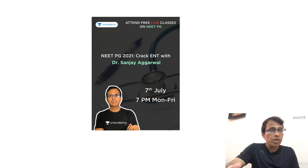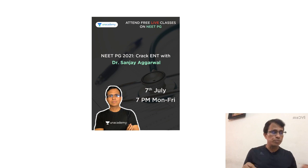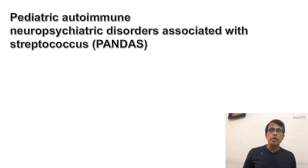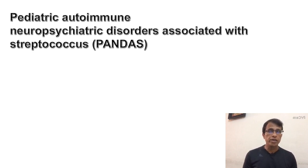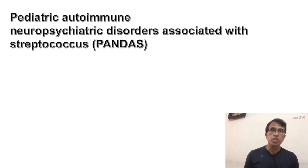Let's dive straight into the syndromes we are going to talk about today. The first one is PANDAS — Pediatric Autoimmune Neuropsychiatric Disorder associated with Streptococcus. The short form PANDAS is important — this is what they ask you in the exam. When they ask about PANDAS in relation to URTI, you must know the full form. This is essentially a neuropsychiatric disorder in children, but it gets aggravated or manifests only when there is a Streptococcus infection of the tonsil.